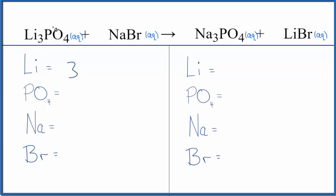We have three lithiums. We're going to use a trick here. We have a phosphate here and a phosphate here, so we're just going to count that as one thing. So we have one phosphate, one sodium, and one bromide.